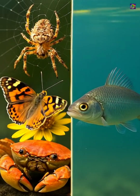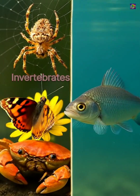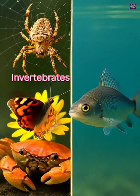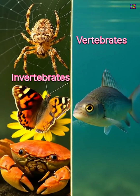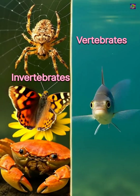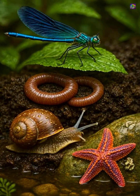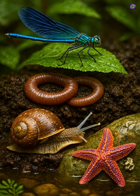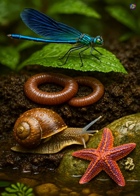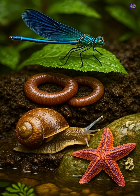Animals are divided into two major groups: invertebrates, which lack a backbone, and vertebrates, which have an internal skeleton with a backbone. Invertebrates include insects, worms, mollusks, and starfish, making up the majority of animal life on Earth.